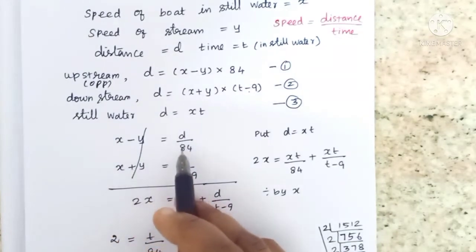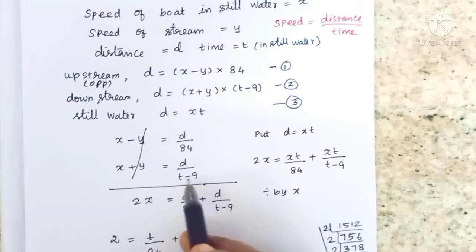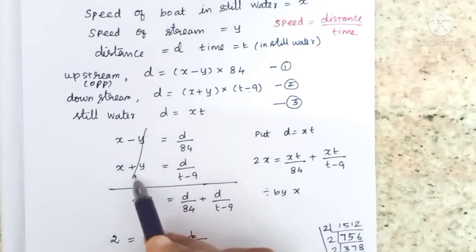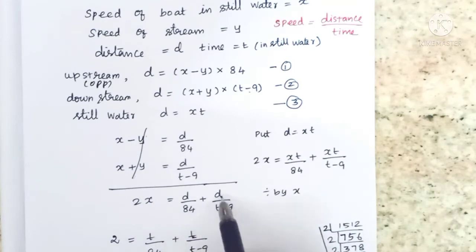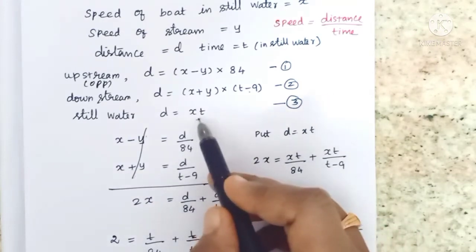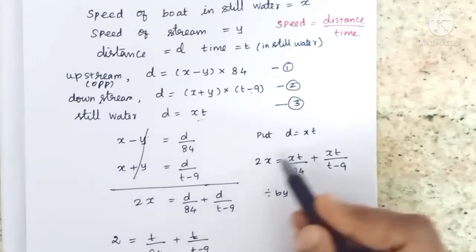x minus y equals d by 84, x plus y equals d by t minus 9. Adding these: x plus y minus y, so x plus x equals d by 84 plus d by t minus 9. Since d equals xt in the third equation, we can substitute.